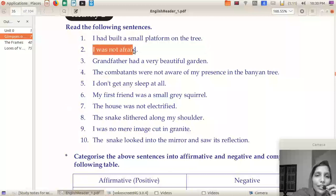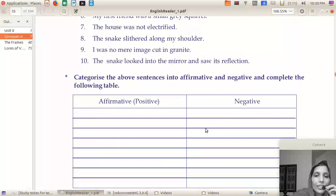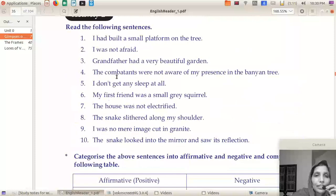I had built a small platform on the tree is a positive sentence. I was not afraid - where can you write this? Here, in this column. You can write this. Grandfather had a very beautiful garden - this is a positive sentence.